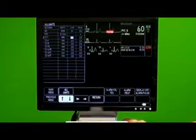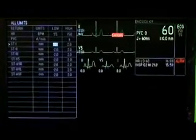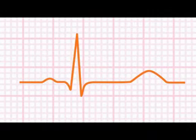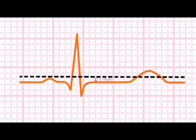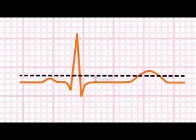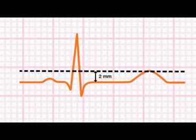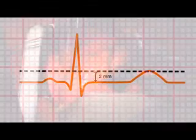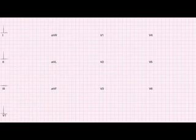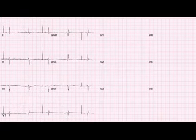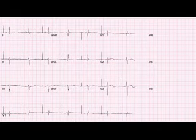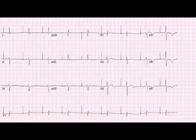ST segment alarms should be set at 1 or 2 millimeters from the patient's baseline, rather than the isoelectric line, to avoid false ST alarms. A setting of 1 millimeter is appropriate for patients at high risk for ischemia, and a setting of 2 millimeters is appropriate for more stable patients. For patients with a pacemaker, you may need to select settings specific to the pacemaker to decrease the possibility of counting pacemaker artifacts as QRS complexes.